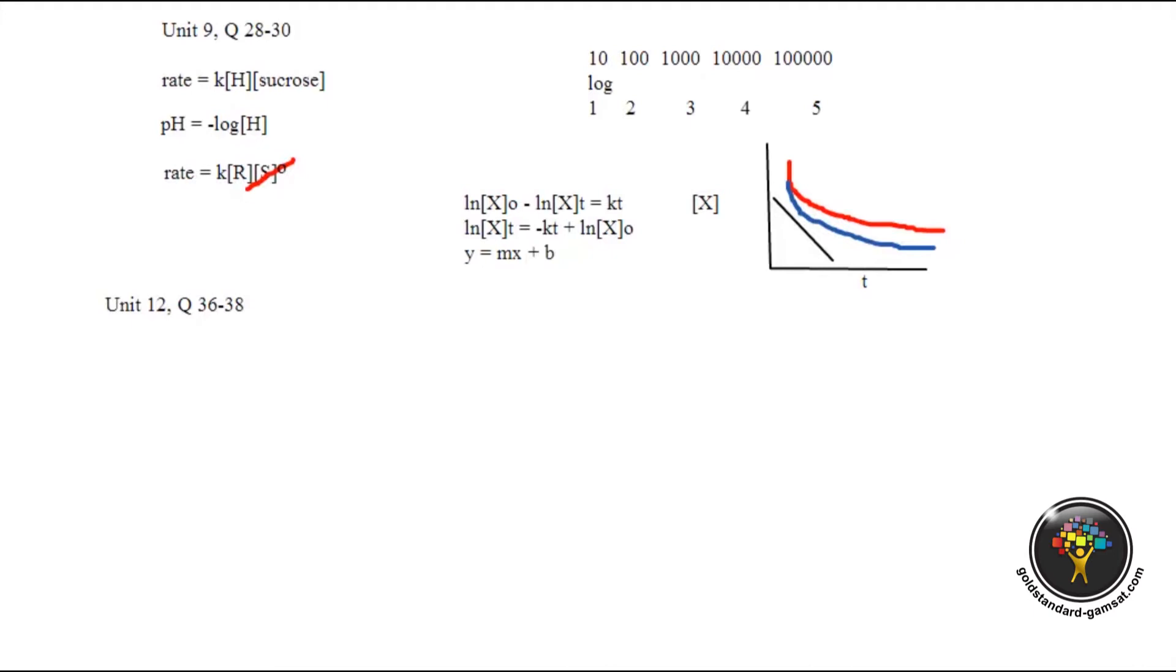Anytime you see the small letter p in front of a k, it means negative log. pH means negative log hydrogen ion concentration, pOH is negative log OH minus concentration, pKa means negative log Ka. They also give you that information, but knowing it ahead helps because you also know what Ka is - the acid dissociation constant.